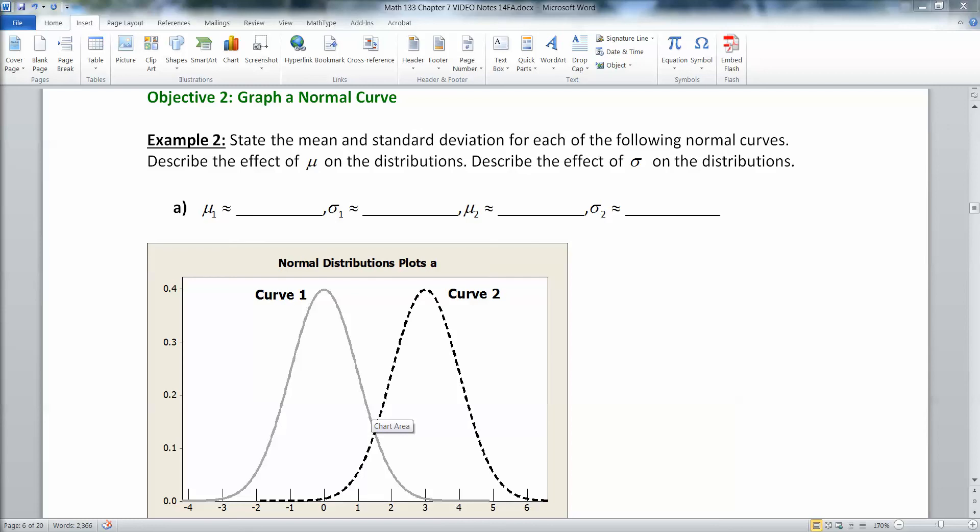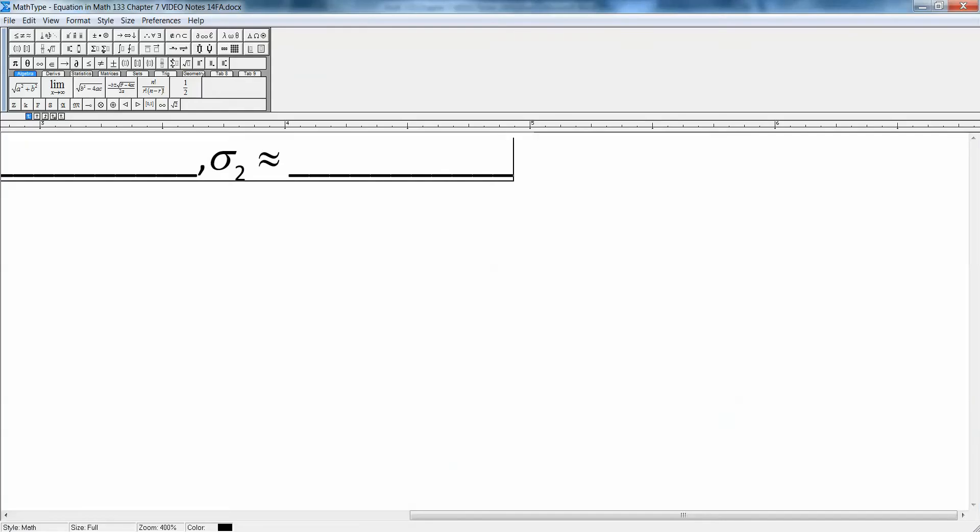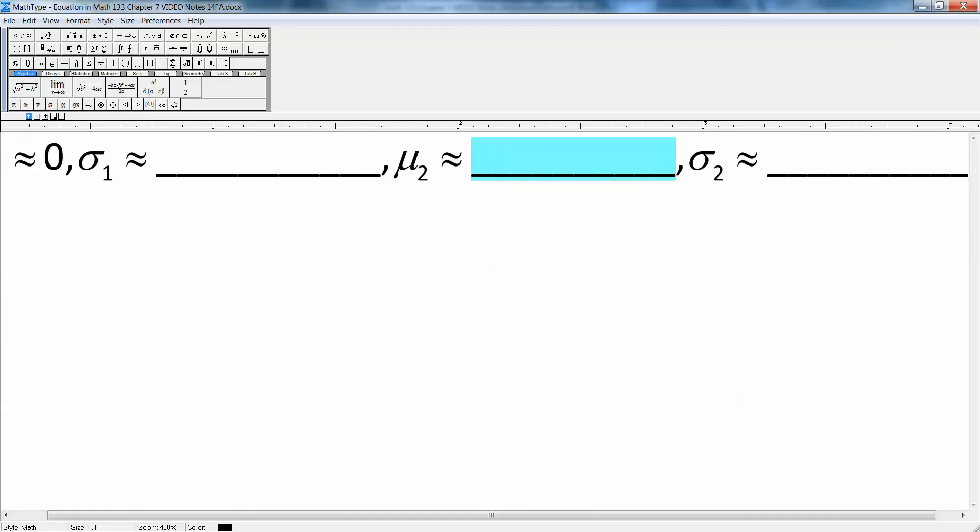And curve number 2, its mean is at 3. Okay. So let me type that up. So curve number 1 had a mean of 0, approximately. And curve number 2 had a mean of 3.